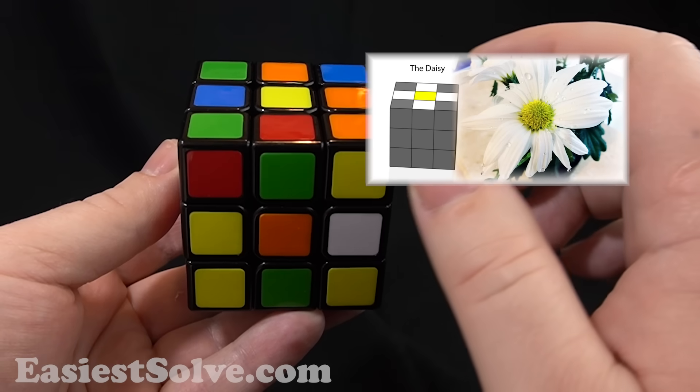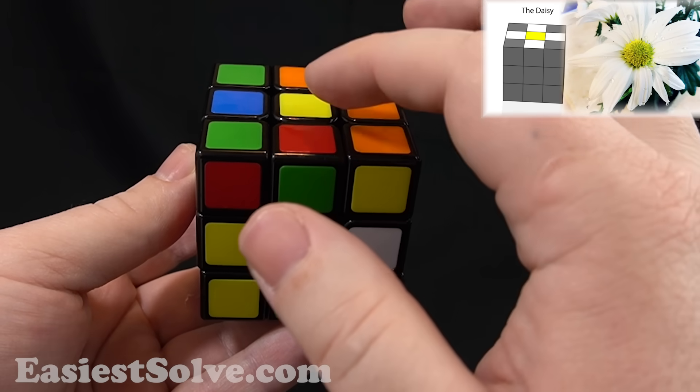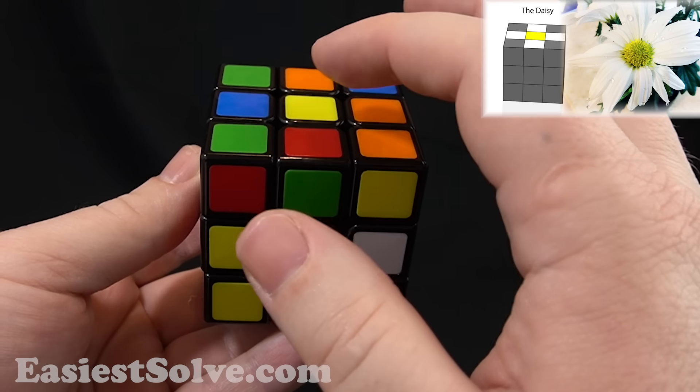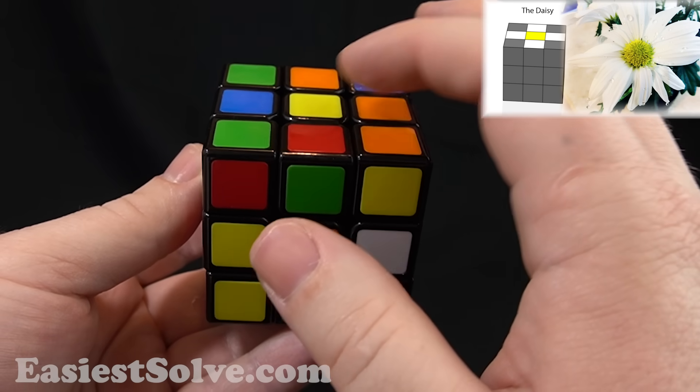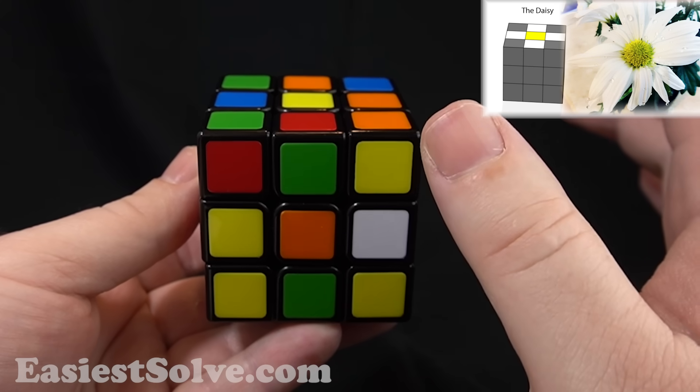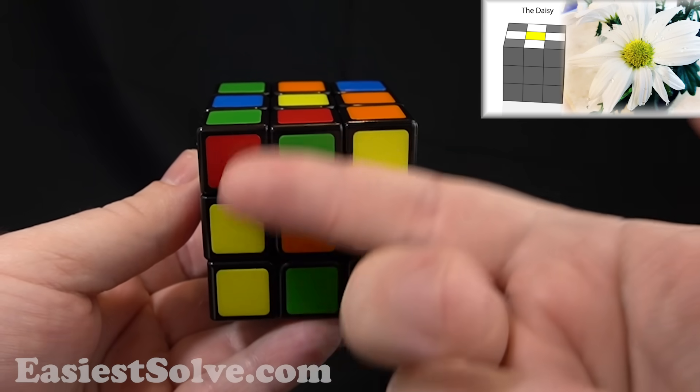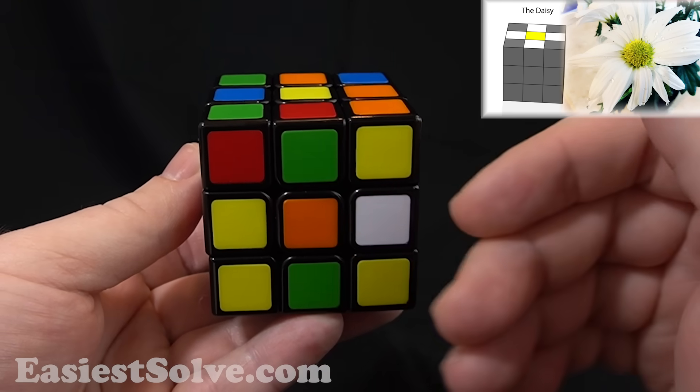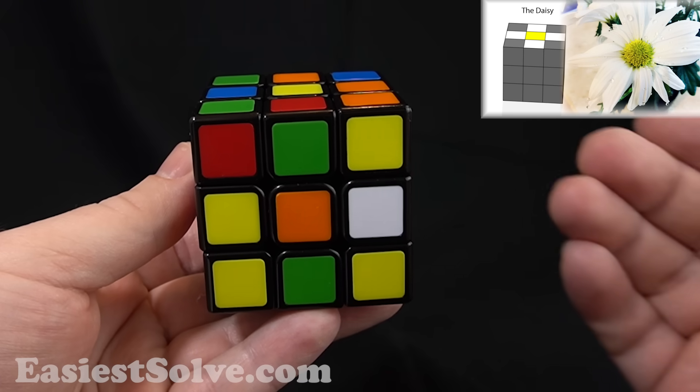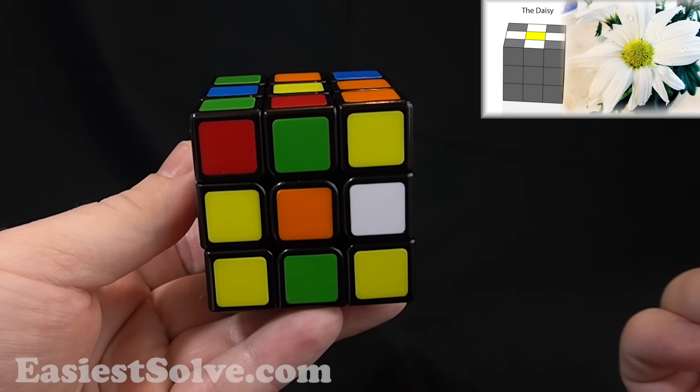First thing we're going to do is start with the yellow side up. You know what side the yellow side is because the middle is yellow. So this is the yellow side. It's facing up. And then it doesn't matter what side is facing forward, but we're going to focus on the top and the side facing us. Again, it doesn't really matter what side is facing you.